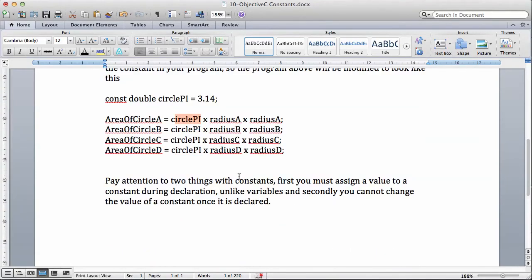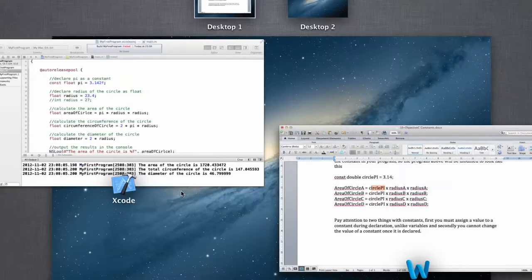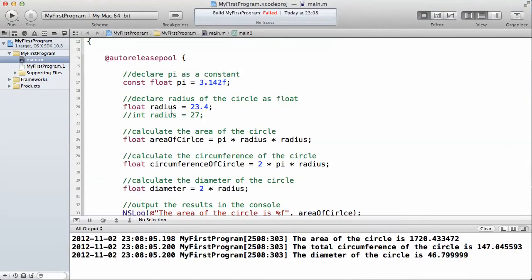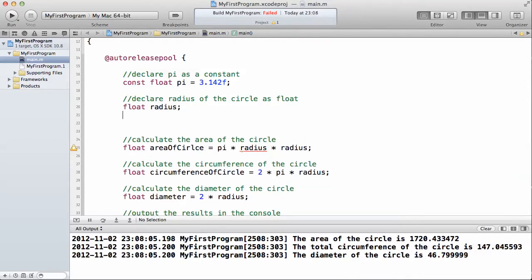You have to pay attention to two things with constants. First, you must assign a value to a constant during declaration. What that means is this: let me show you. Whenever we declare a variable, we don't always have to assign a value to it. If we declare a variable radius, we can say float radius—that's perfectly allowed—then we can say radius equals 23.